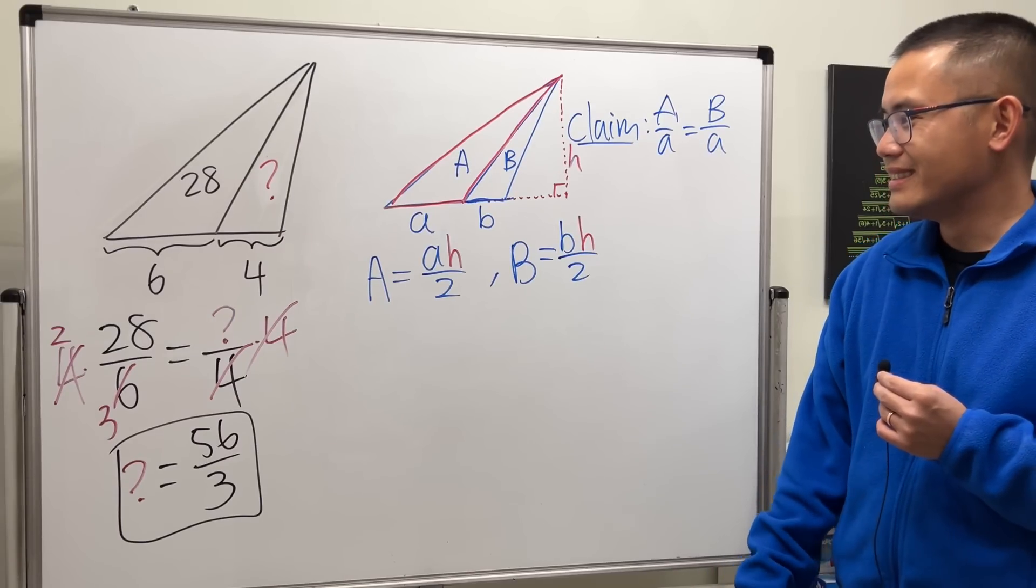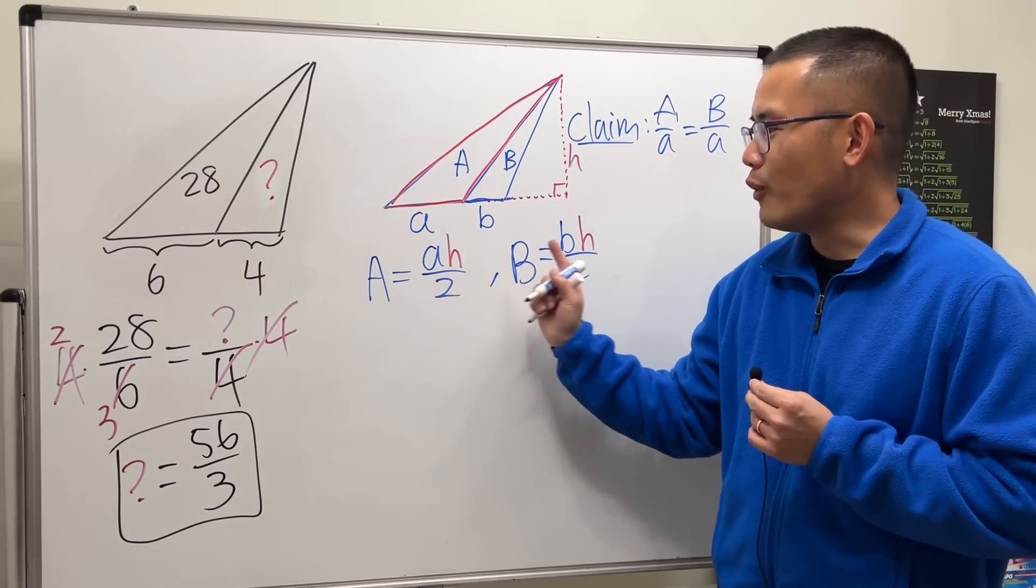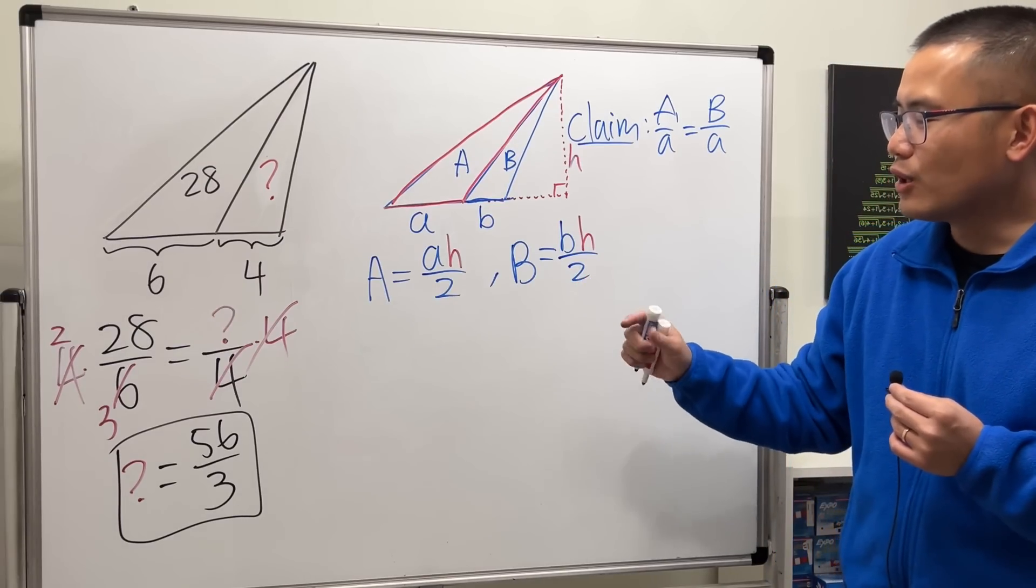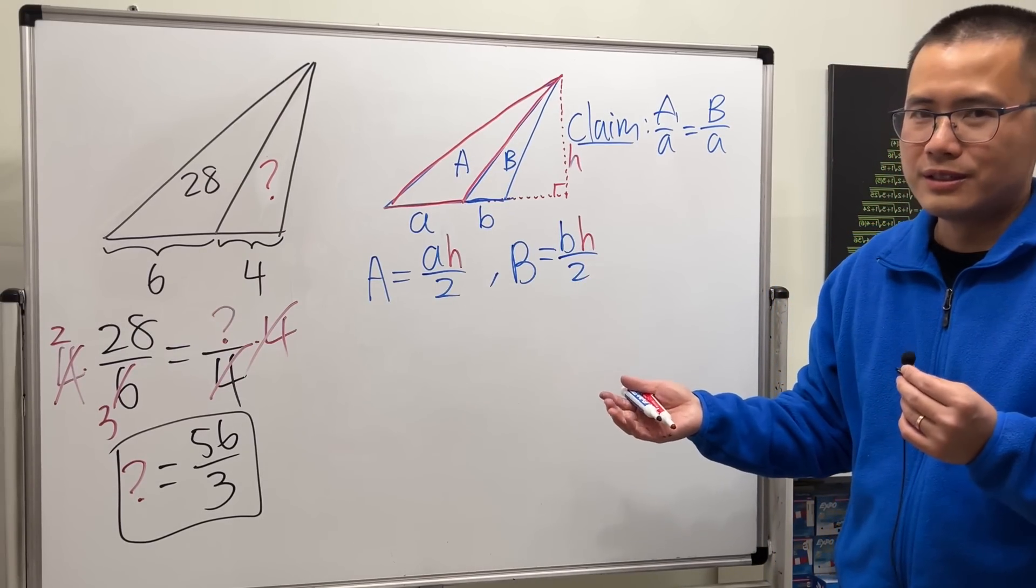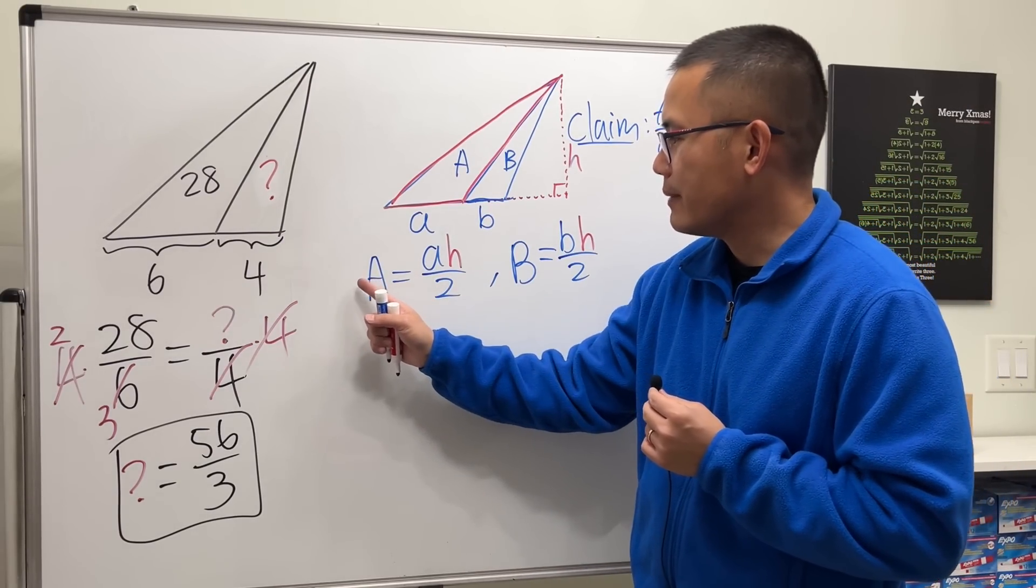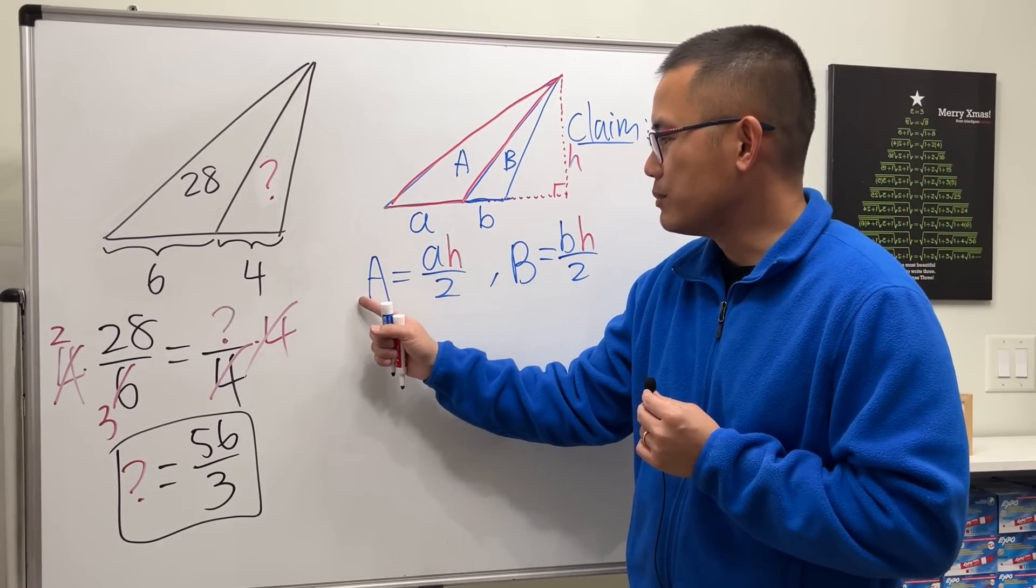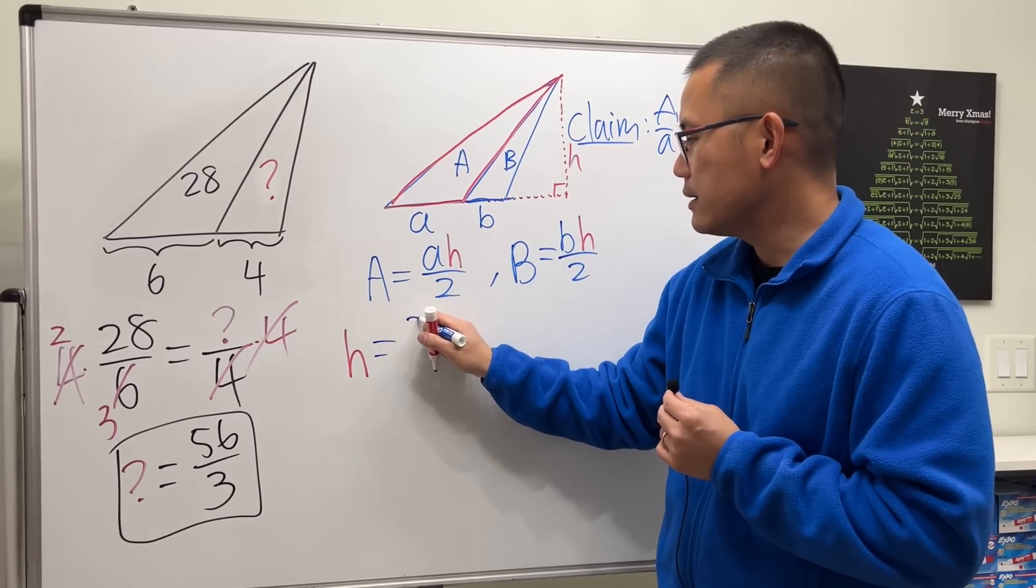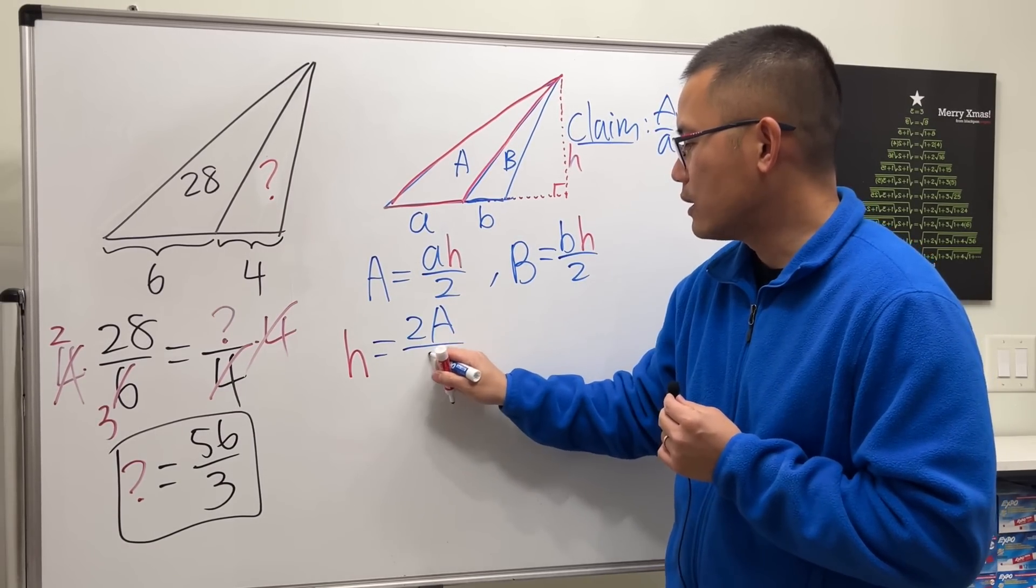Now as you can see, both the equations share the same h. So if we can solve for h and then we can just set them equal to each other. Right here I'm just going to multiply 2 on both sides and divide a to both sides, so h is equal to 2A over little a.